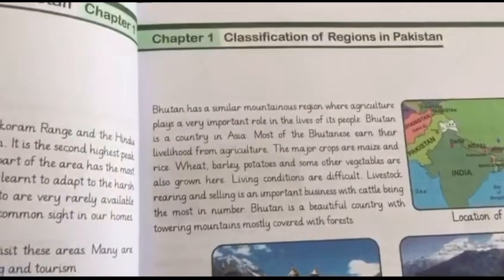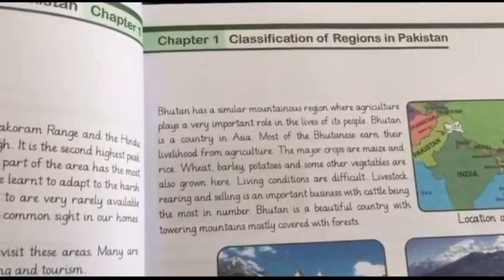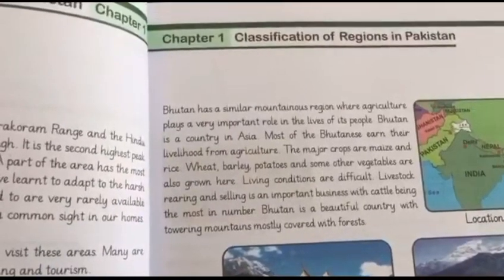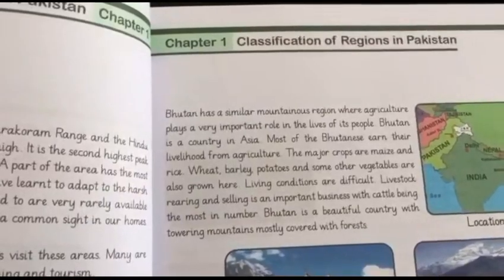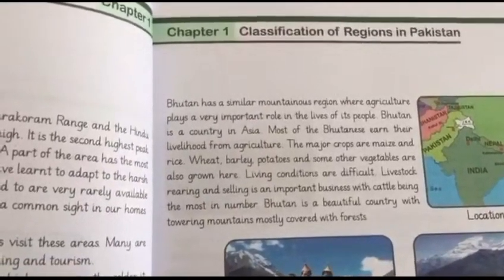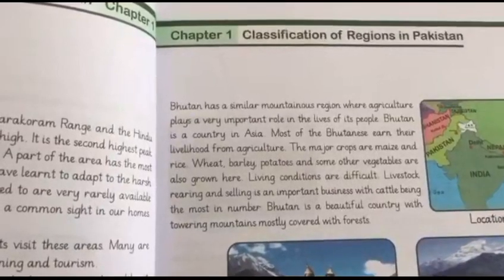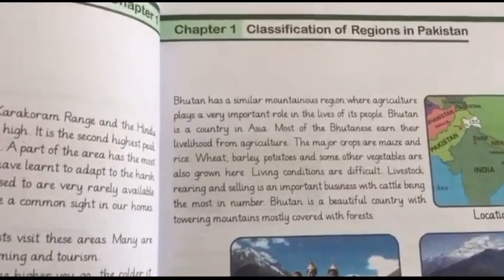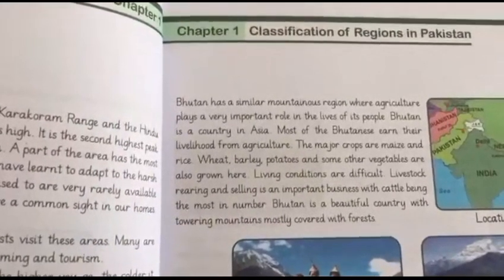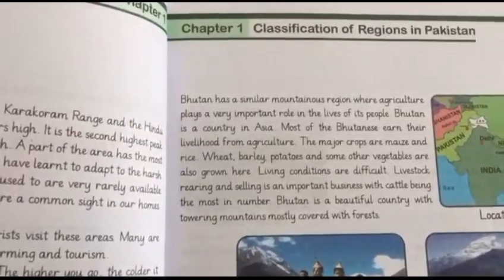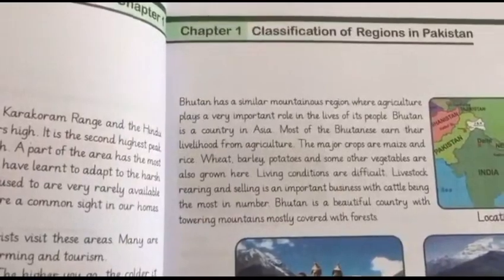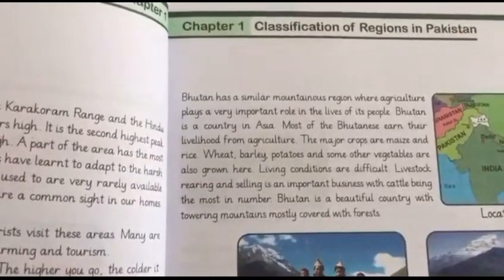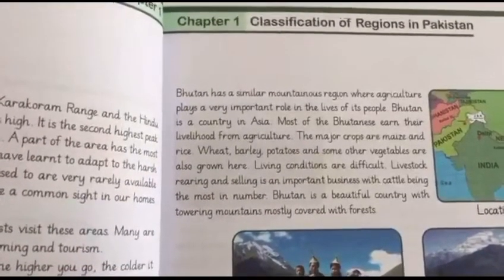Livestock rearing and selling is an important business, with cattle being the most numerous. Livestock means domestic animals like cows, buffaloes, hens, and goats — animals that provide meat, milk, or eggs. They keep these animals on farms, take care of them, and sell them when they need money.